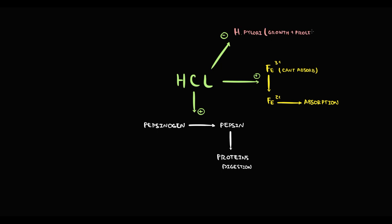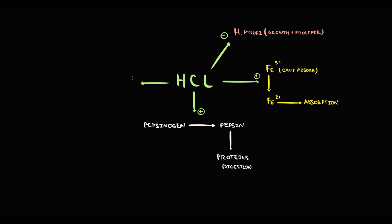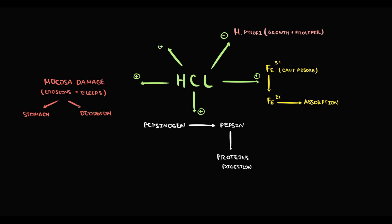Also, hydrochloric acid suppresses the growth and proliferation of Helicobacter pylori. But at the same time, hydrochloric acid is a very dangerous substance because it can cause mucosal damage — initially erosions, but then erosions can progress to ulcers. Usually mucosal damage occurs in the stomach and duodenum, but if gastroesophageal reflux is present, the same mucosal damage can occur in the esophagus.